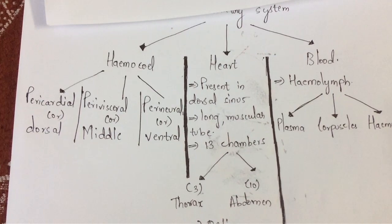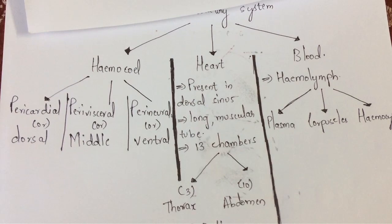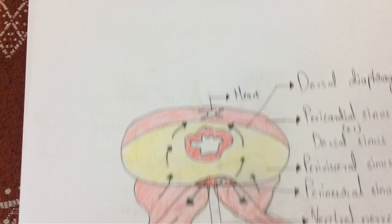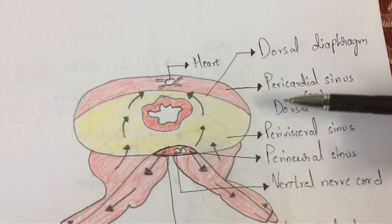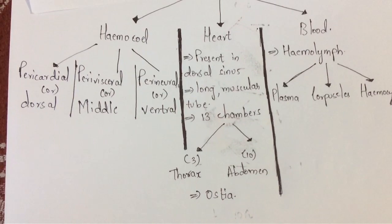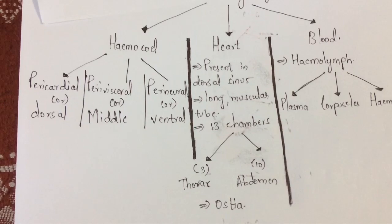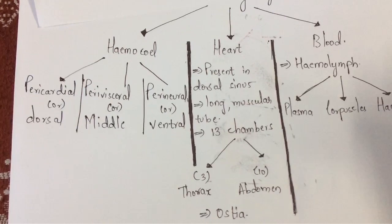So the hemocoel is divided into three parts: pericardial sinus, perivisceral sinus (or middle sinus), and perineural sinus (or ventral sinus). The perivisceral sinus — the yellow-colored region — is much larger when compared to the pericardial sinus and perineural sinus. The pericardial sinus and perineural sinus are small in size because they are enclosed by the heart and nerve cord respectively.